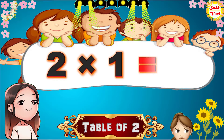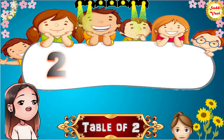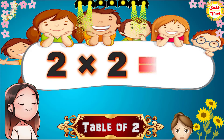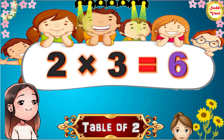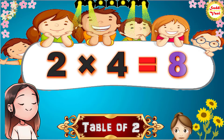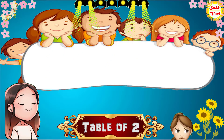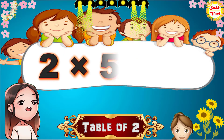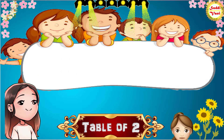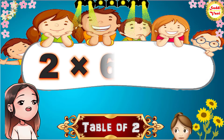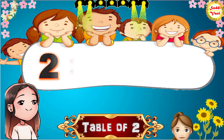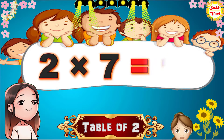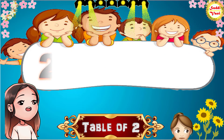2 1s are 2, 2 2s are 4, 2 3s are 6, 2 4s are 8, 2 5s are 10, 2 6s are 12, 2 7s are 14.